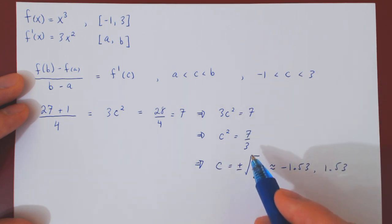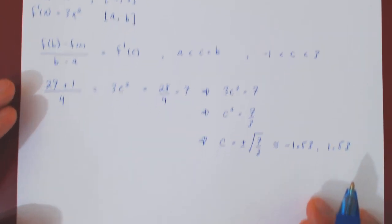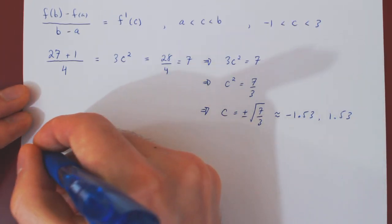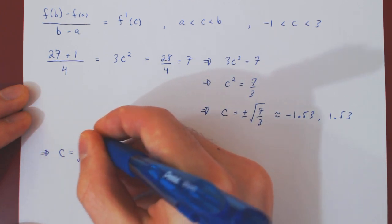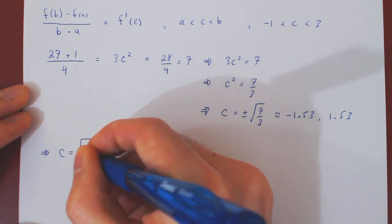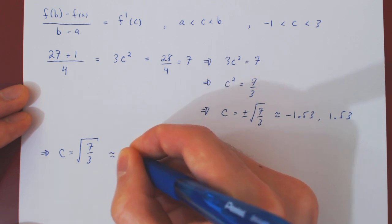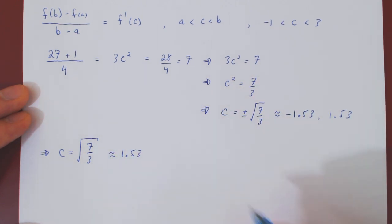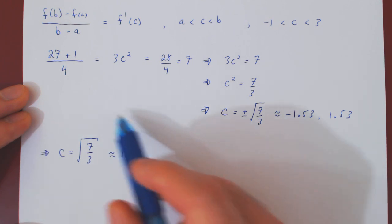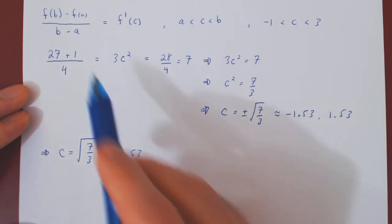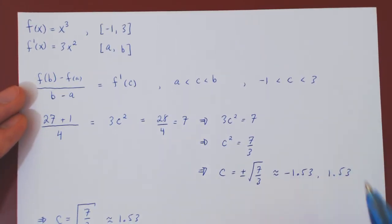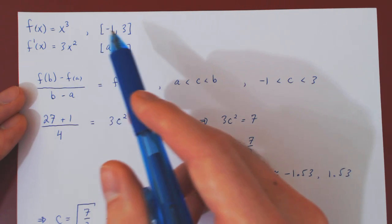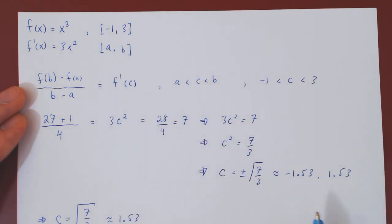Which is exactly the square root of 7 over 3, which, again, is approximately 1.53. So in this case, there is a unique value of c that satisfies the mean value theorem, and we can visualize this quite roughly if we produce a rough sketch of the graph of x cubed on the interval from negative 1 to 3.